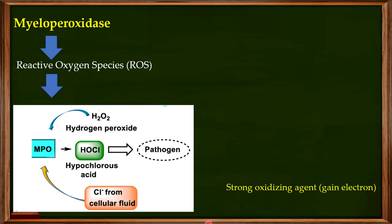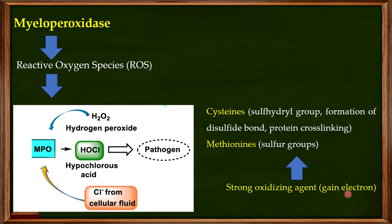Hypochlorous acid is a very strong oxidizing agent — an agent that gains electrons from its substrate. When it reacts with something, it attracts electrons from that substrate, oxidizing it. Specifically, hypochlorous acid acts on proteins, targeting the thiol group of the cysteine amino acid. Oxidation of this thiol group leads to formation of disulfide bonds, which causes cross-linking of proteins.